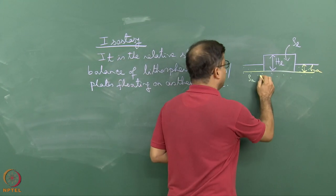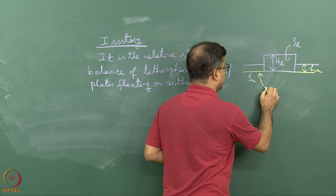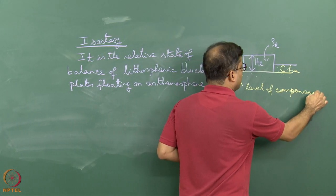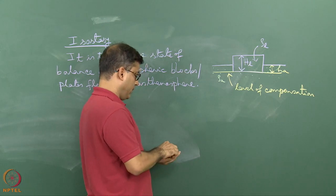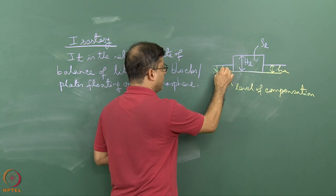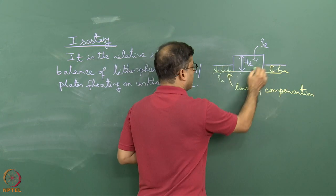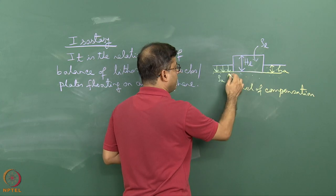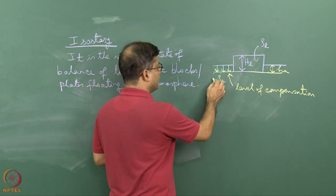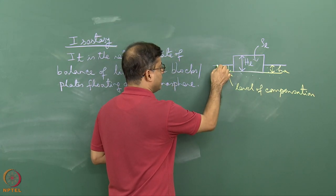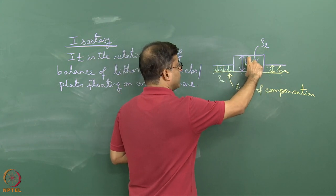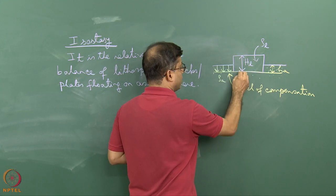This yellow line can be called the level of compensation. What does this mean? It means that at that depth, the pressure exerted by the asthenospheric column equals the pressure exerted by the lithospheric block at the base.